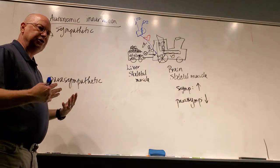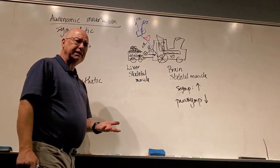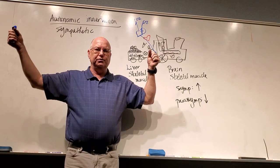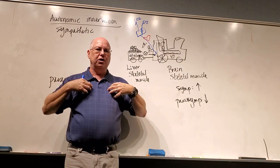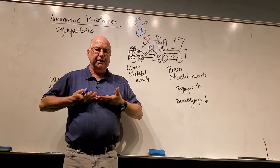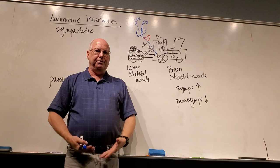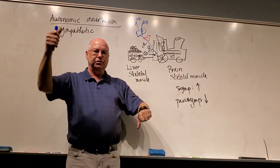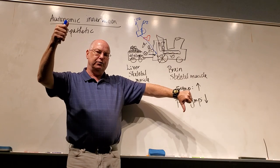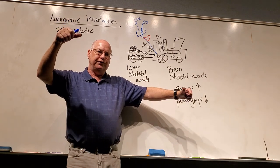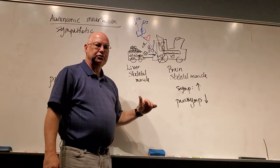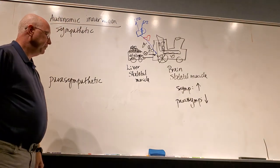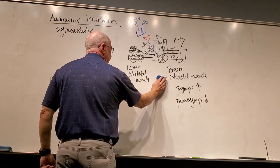A simple way to think about it: above the diaphragm — skeletal muscle, heart, lungs, and brain — everything increases under sympathetic stimulation. Under parasympathetic, everything below the diaphragm — the viscera — ramps up, and those above-diaphragm systems shut down. They are opposites: if one goes up the other goes down. Under parasympathetic, I will decrease brain and skeletal muscle activity and increase digestive, urinary, and reproductive function.